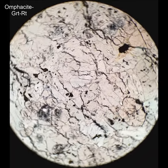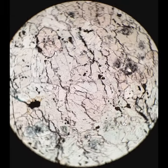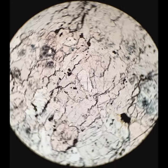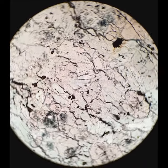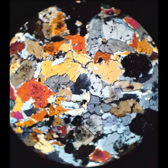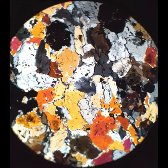This is omphacite from an eclogite. So most of this material is a slightly green pleochroic clinopyroxene, sodic clinopyroxene. And then there's some garnet in here. So when I cross the polars, the garnets will go black. And you'll see that everything else that is birefringent is this sodic clinopyroxene that we call omphacite.